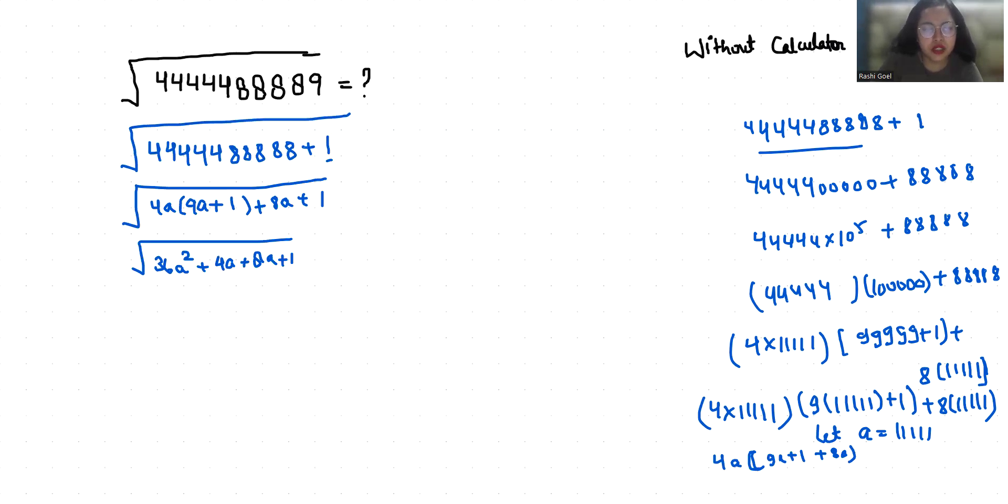So 36a squared plus 12a plus 1. This 12a I can write as plus 6a plus 6a plus 1.